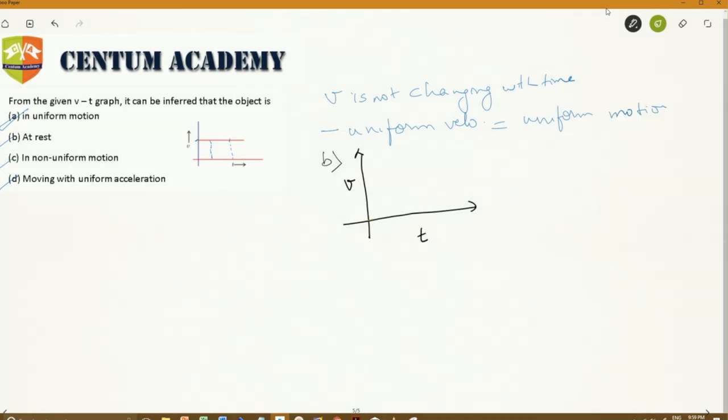At rest, velocity time graph will be like that. With time T, if you see the velocity is 0 all the time. So this is a case of body being at rest.